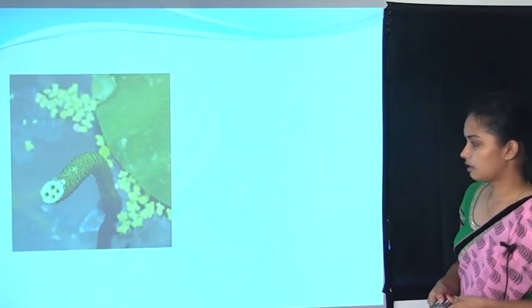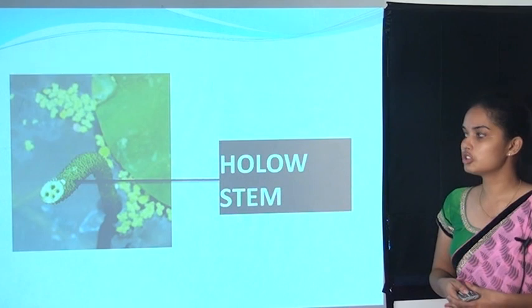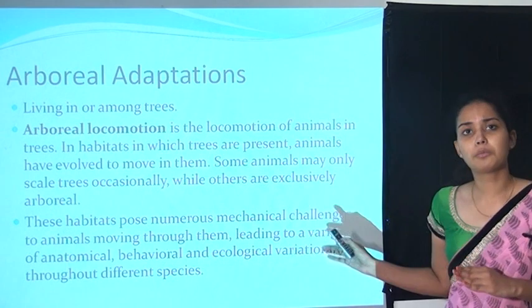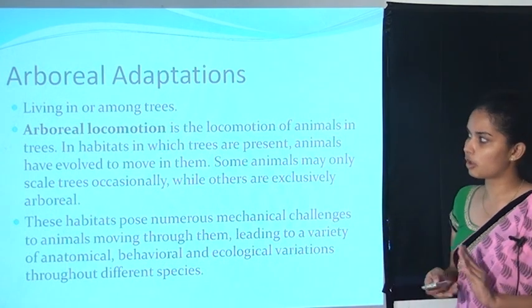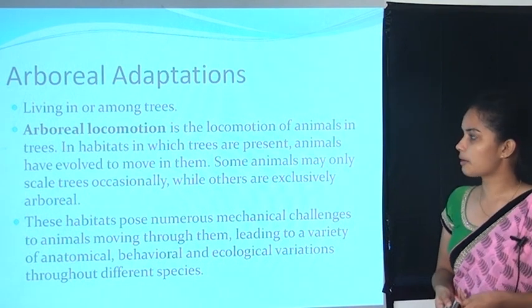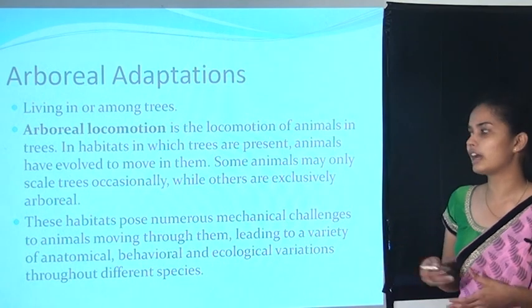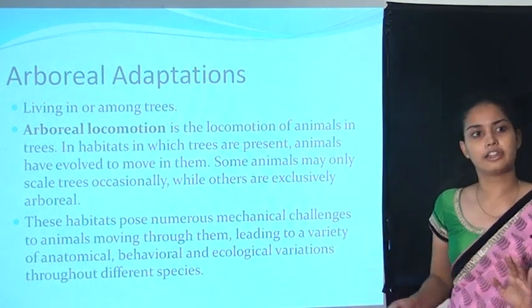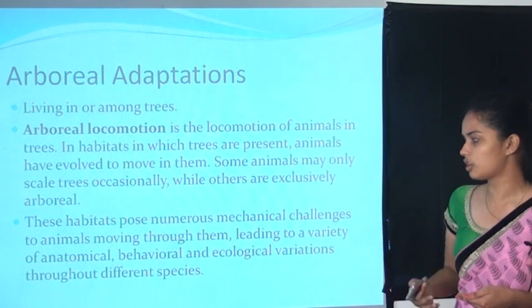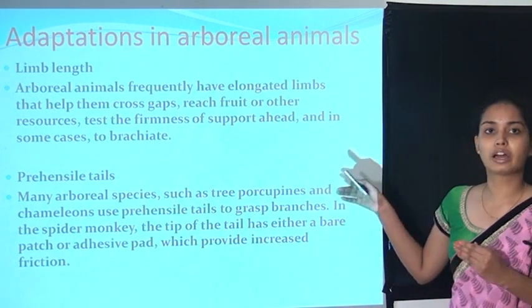The water hyacinth is an example — its roots are very small and it has hollow stems that help with oxygen transport. Arboreal adaptation: arboreal refers to any plant or animal that lives among trees. Arboreal locomotion is the locomotion of animals in trees. In habitats where trees are present, animals have evolved to move in them — some only scale trees occasionally, while others are exclusively arboreal, living in trees alone.